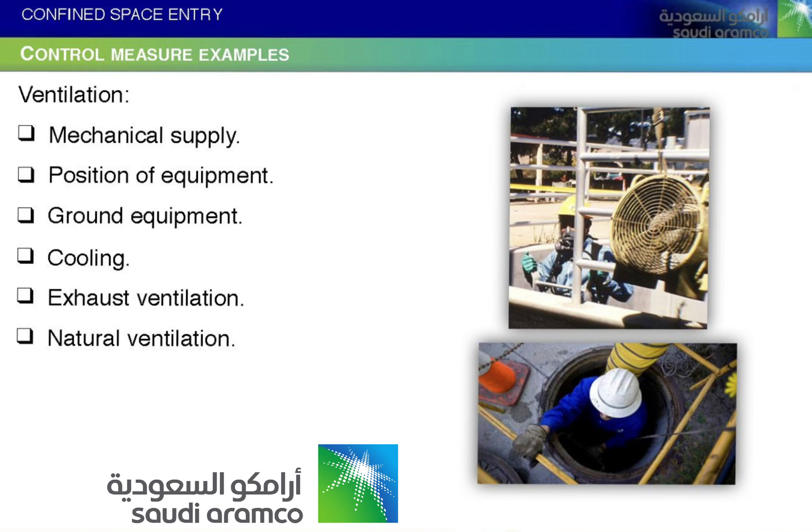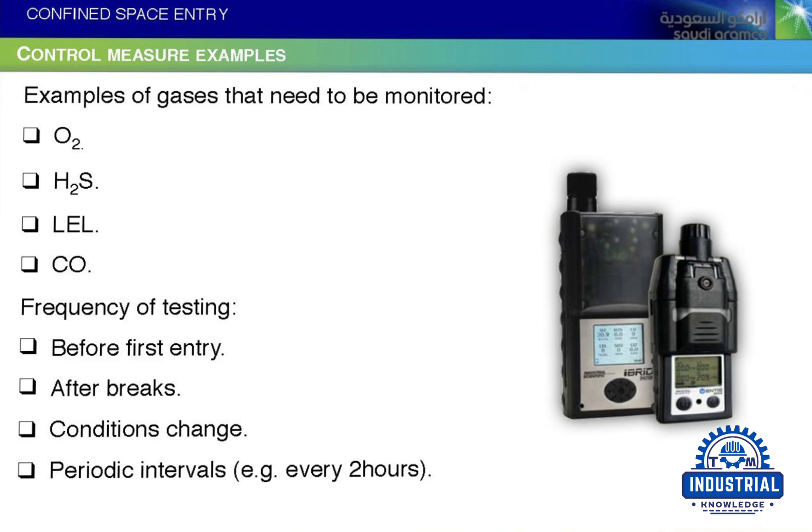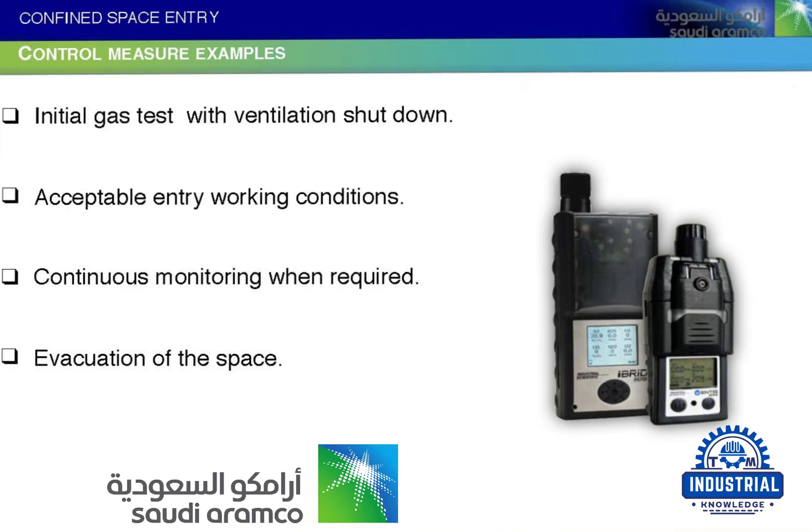Examples of gases that need to be monitored: O2, H2S, LEL, and CO. Frequency of testing: before first entry; after breaks; when conditions change; at periodic intervals, e.g., every 2 hours. Also required: initial gas test with ventilation shutdown; verification of acceptable entry and working conditions; and continuous monitoring when required, followed by evacuation of the space if conditions deteriorate.